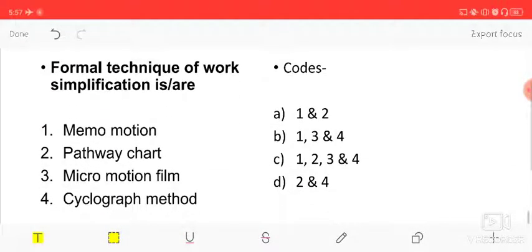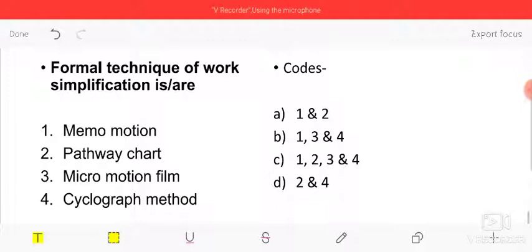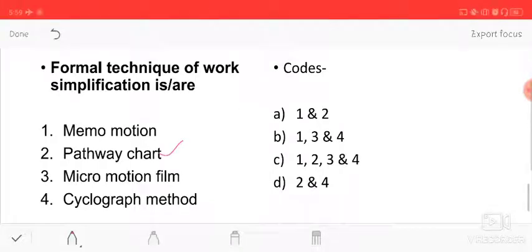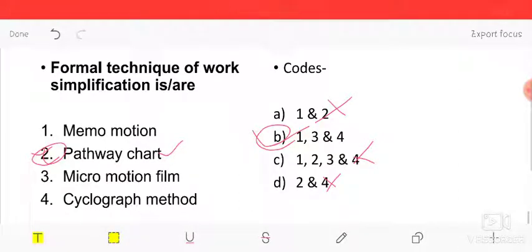Formal technique of work simplification is - work simplification has formal and informal techniques. Informal is pen and pencil technique like pathway charts, process charts, and operational charts. Select the odd one out - pathway chart is informal. Memo motion and cyclography are formal techniques of work simplification.